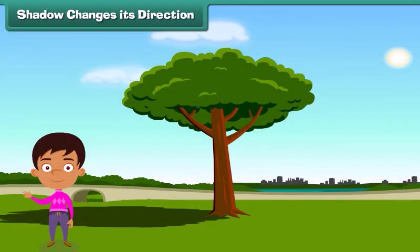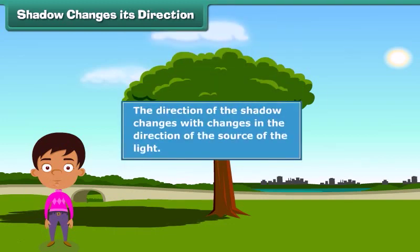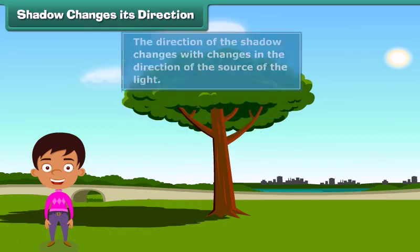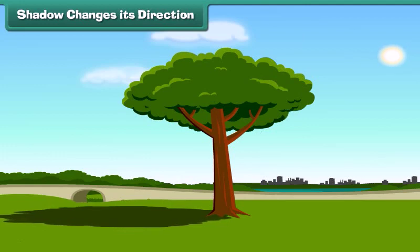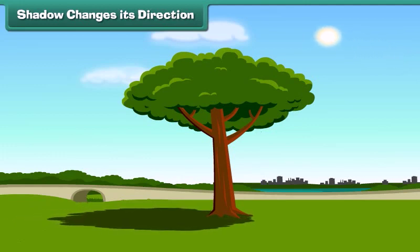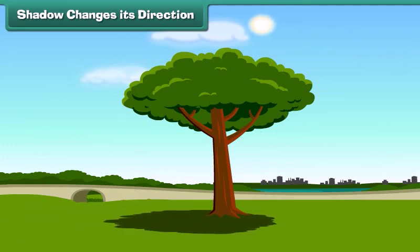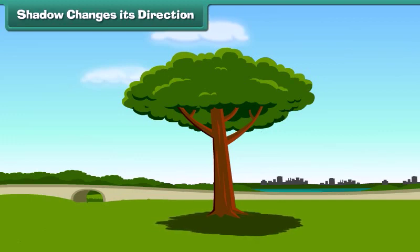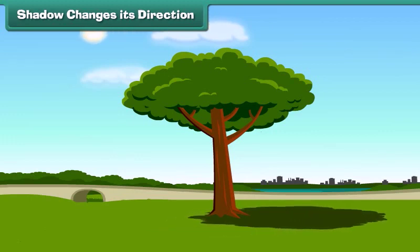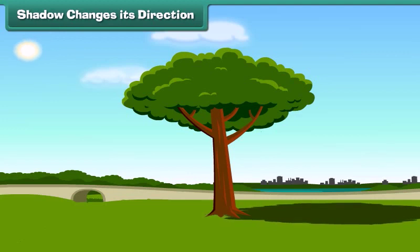You will be surprised to know that the direction of the shadow changes. For example, the shadow of these trees changes as the sun moves from east to west during the day. Sometimes it becomes long and sometimes short. Let's see how this happens.